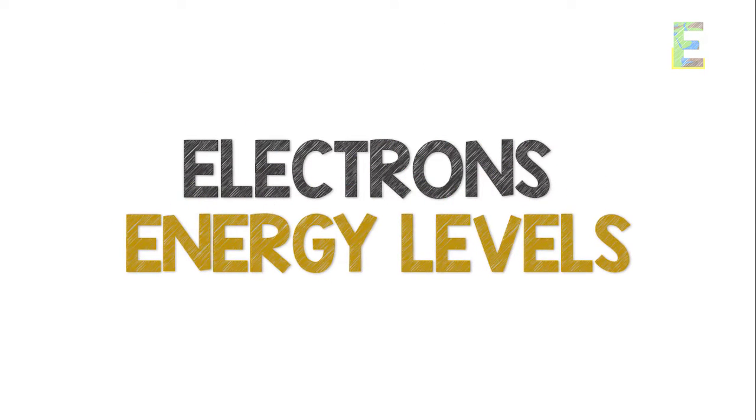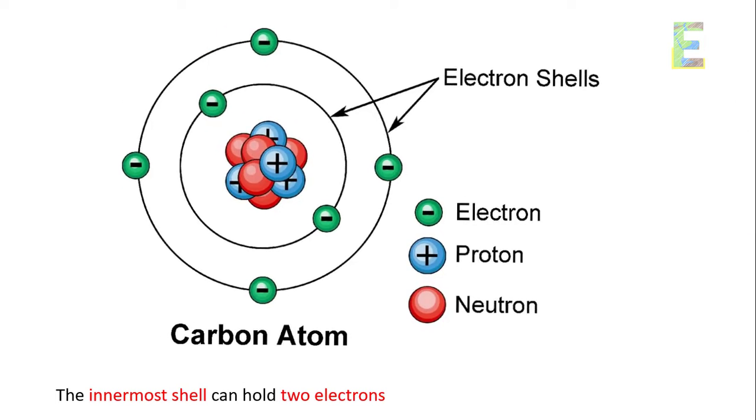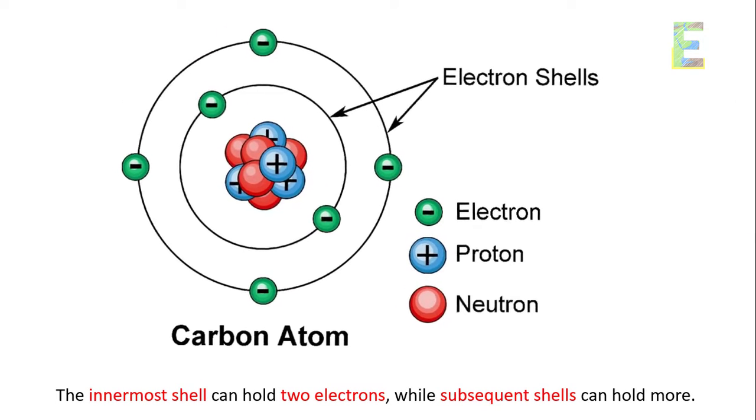Electrons energy levels. Electrons are found in specific energy levels or electron shells, each with a maximum capacity of electrons. The innermost shell can hold two electrons, while subsequent shells can hold more.